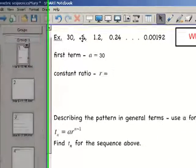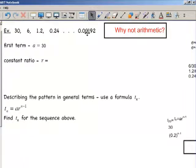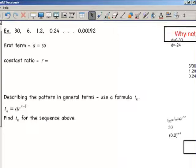If it was arithmetic, we would be increasing by a constant difference each time. Just doing a quick check, when I subtract 30 from 6, I get negative 24. When I subtract 6 from 1.2, I get a different answer of negative 4.8. So there is no constant difference here. So that sequence is not arithmetic.